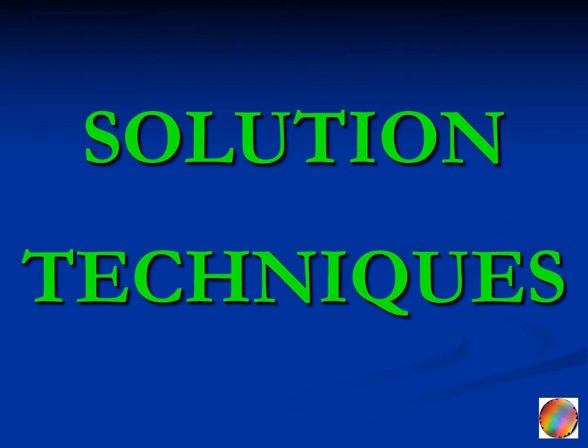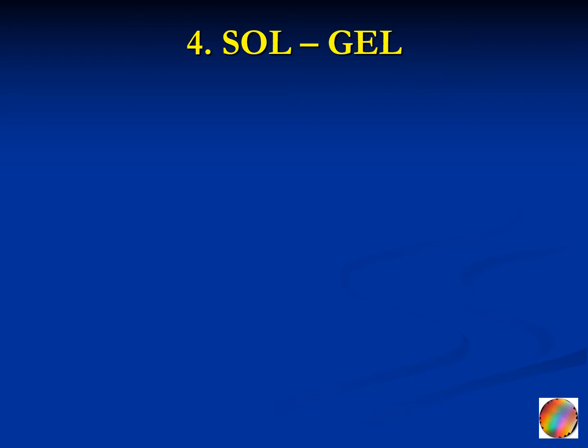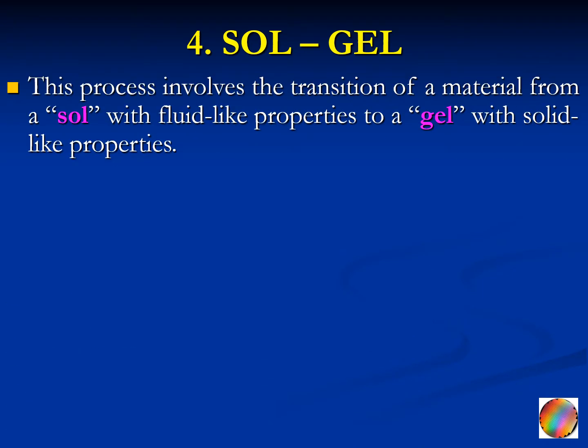So those were the vapor techniques — evaporation, sputtering, and chemical vapor deposition, each with many sub-processes. Let's now move into the solution techniques — techniques that involve the presence of liquids. Here we will talk about two main techniques. The first one is the sol-gel. This process involves the transition of a material from a sol with fluid-like properties to a gel with solid-like properties.